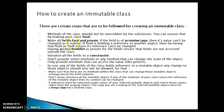The second step is to make all the fields final and private. If the field is of a primitive type, then its value can't be changed as it is final. If the field is holding a reference to another object, then declaring that field as final means its reference can't be changed, but the object itself can still be changed. We will see how to prevent that through an example. Having the access modifier as private ensures that fields are not accessed outside of the class — basically, we are following encapsulation.